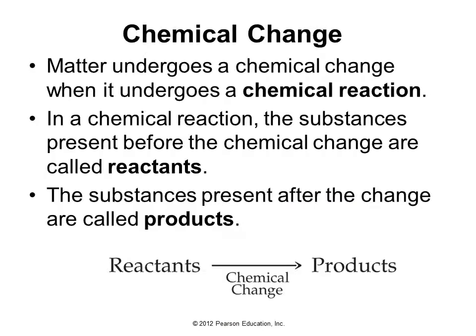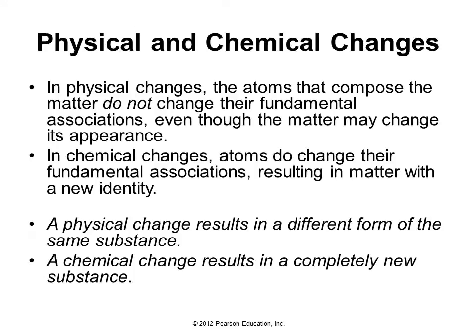Matter undergoes a chemical change when it undergoes a chemical reaction. The substances present before the chemical reaction are called reactants; the substances present after are called products. In physical changes, the atoms that compose the matter do not change their fundamental association, even though the matter may change its appearance, like liquid water to steam. In chemical changes, atoms do change their fundamental association, resulting in matter with a new identity.